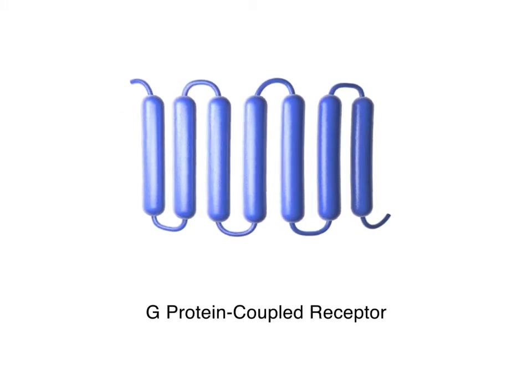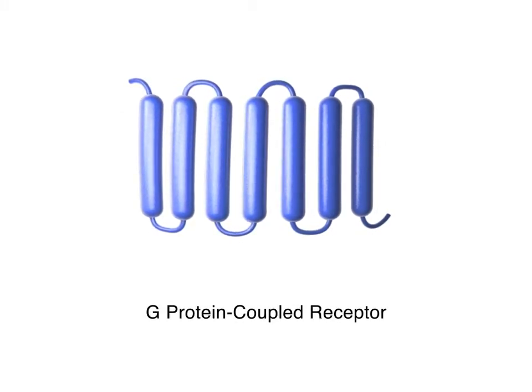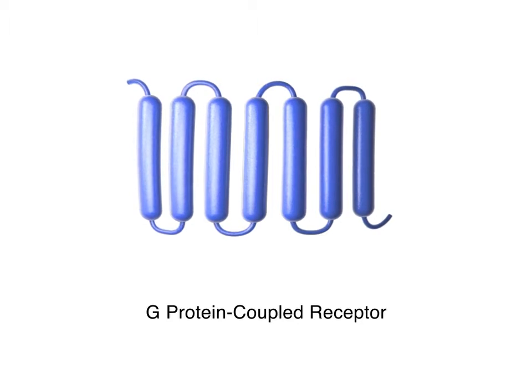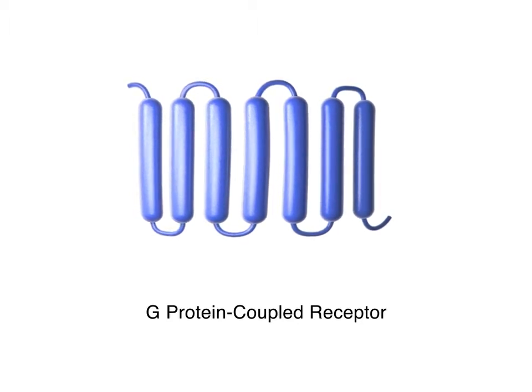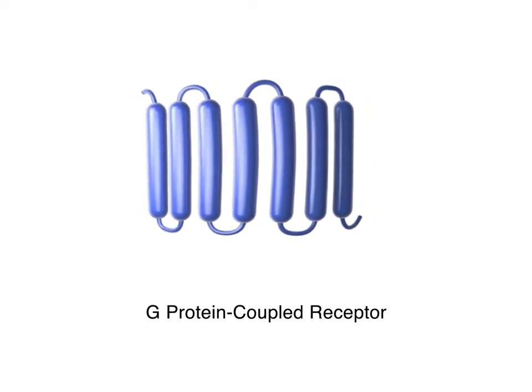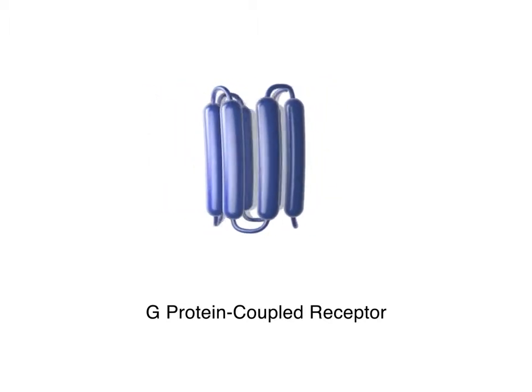G-protein coupled receptors, or GPCRs, constitute the largest family of receptors, with more than 800 genes encoding GPCRs found in the human genome.